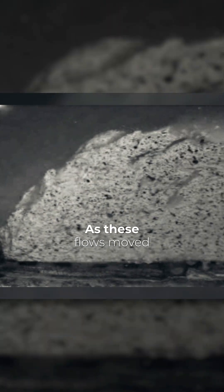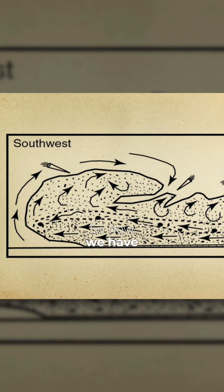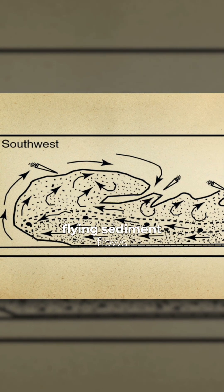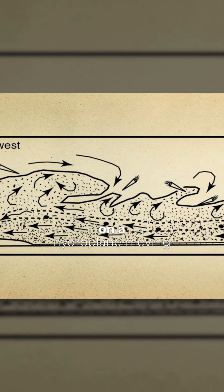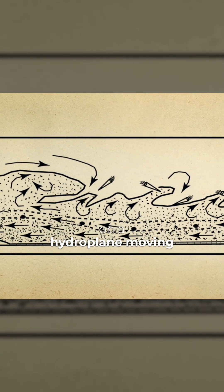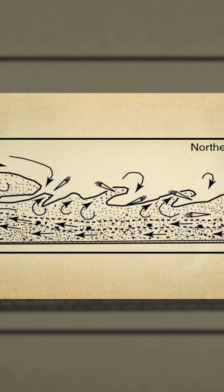And he said, wow, they fly. He noticed they generated a wing shape as these flows moved under the water over the sediment surface. They generate a wing shape and they essentially fly. So now we have flying sediment flows on a hydroplane moving over the ocean floor.